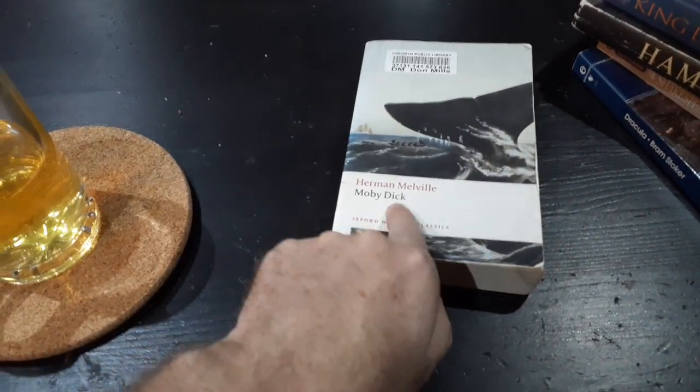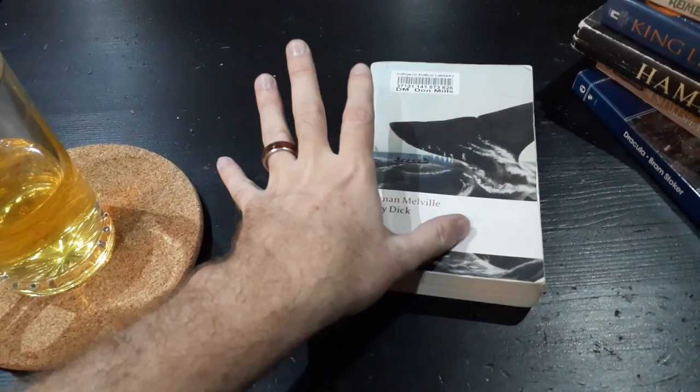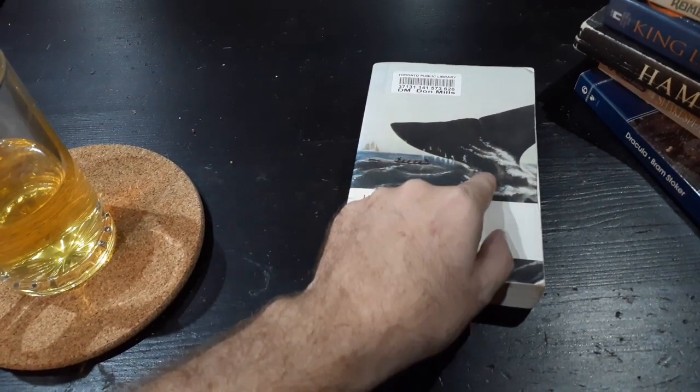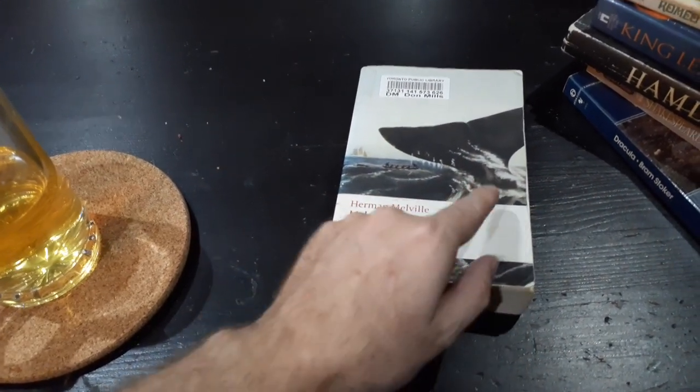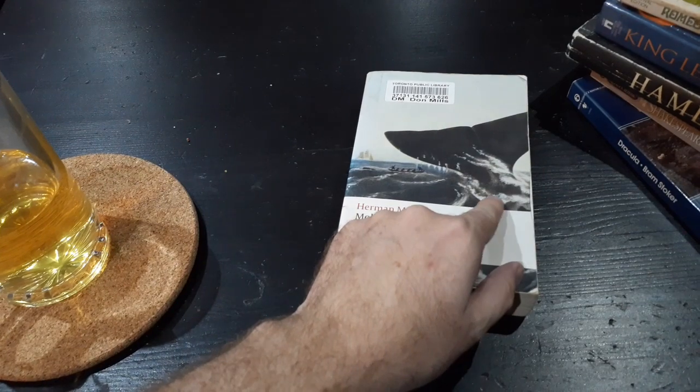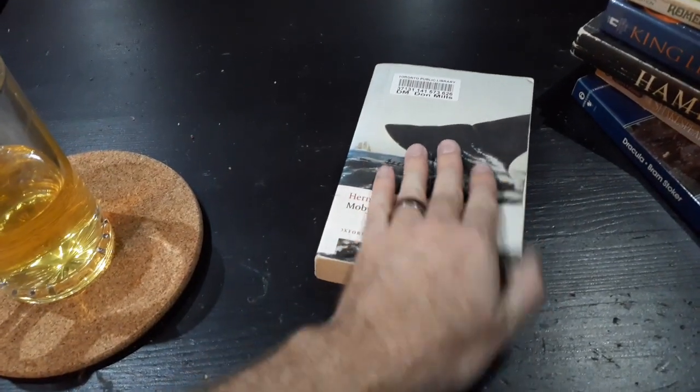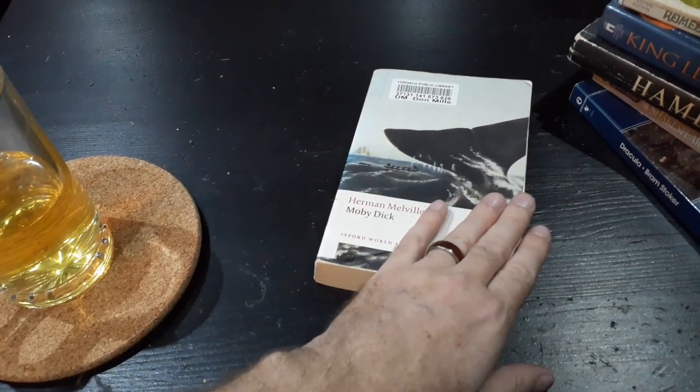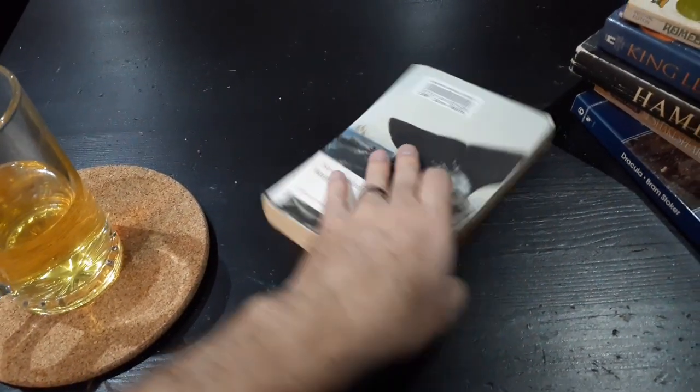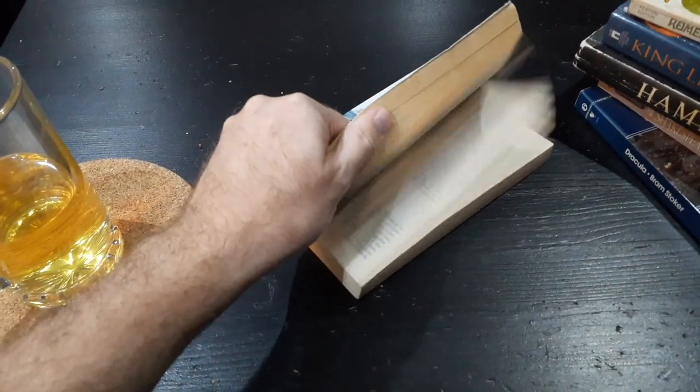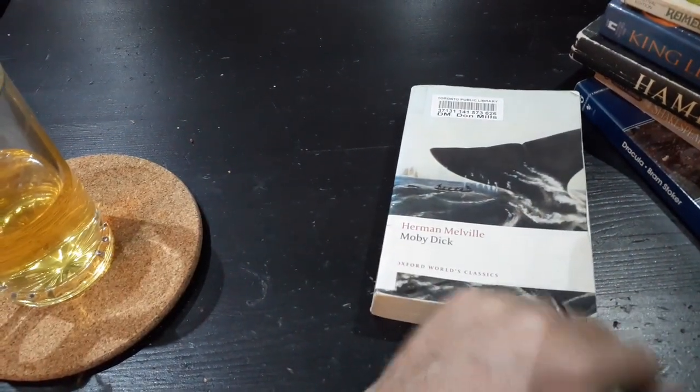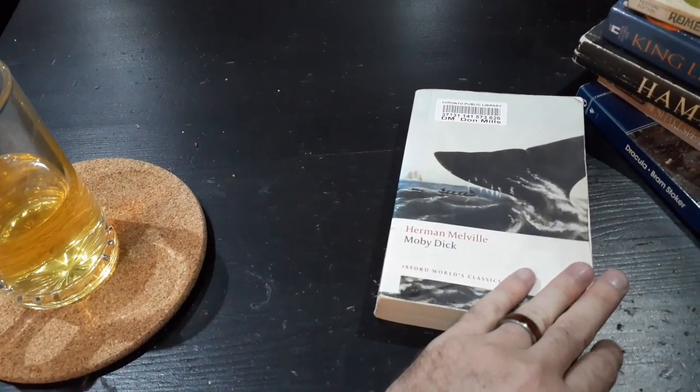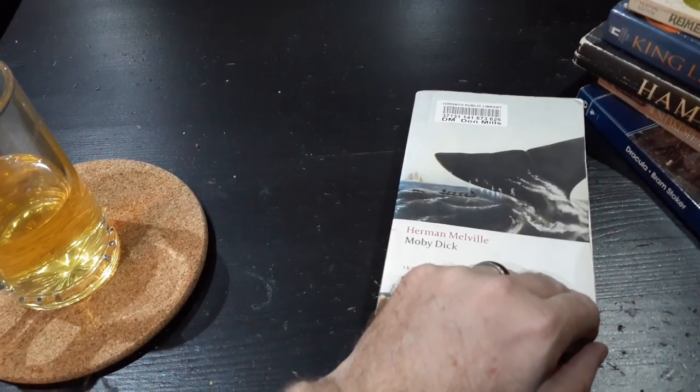You could turn Moby Dick into a fantasy book very easily in terms of you take the plot and you say, Okay, I'm replacing this with a dragon. Or a griffin. Or a giant sea monster. Oh, wait. There already is a giant sea monster. It's a giant albino whale that's, like, they don't really describe what species it is. But, yeah. It's a giant whale that has, like, you know, it's almost like it's undead, honestly. It could be a giant undead whale is how you change it. But it would not require much tweaking to turn it into a fantasy book.